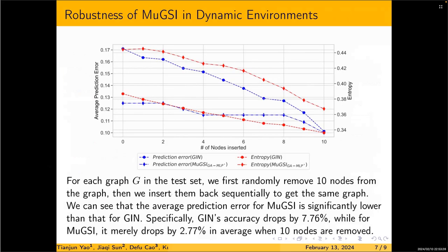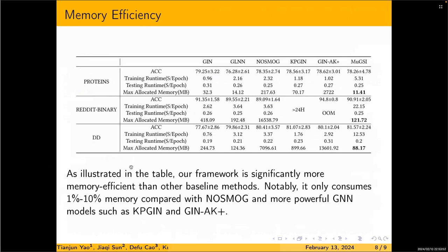In this slide, we conduct another experiment to evaluate the robustness when nodes are sequentially added or removed from the graph. As we can see, the average prediction error for MUXIE is significantly lower than that for GEN, which demonstrates the robustness of MUXIE to distribution shift. Finally, we also underscore the memory efficiency of MUXIE in these slides.